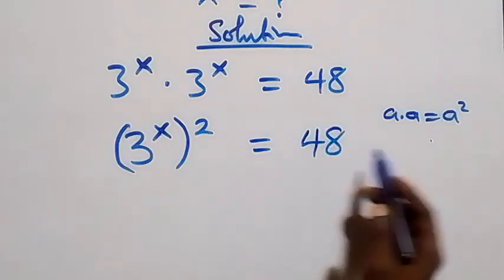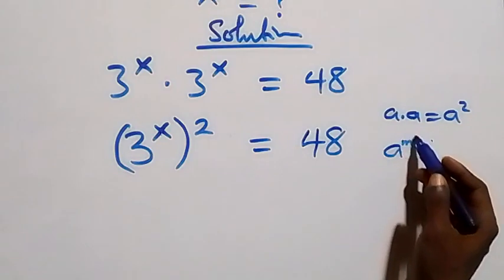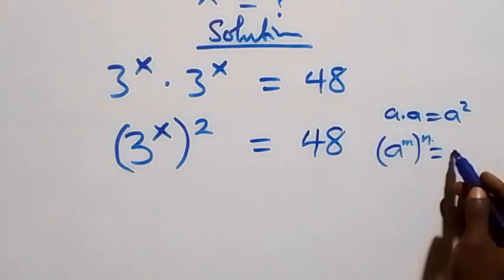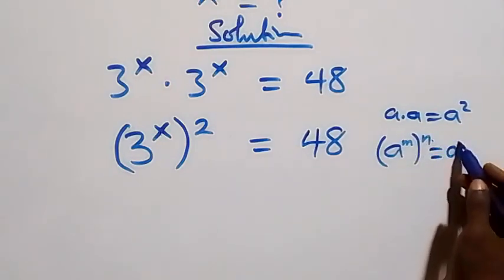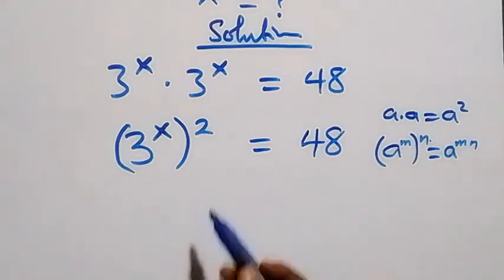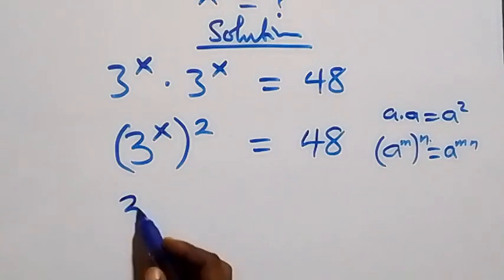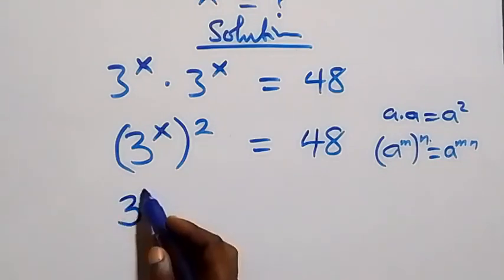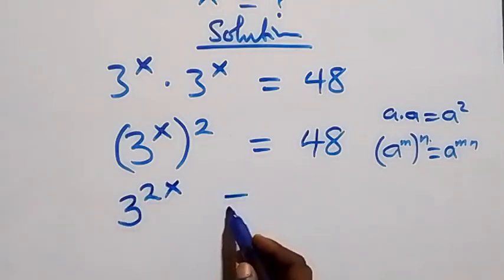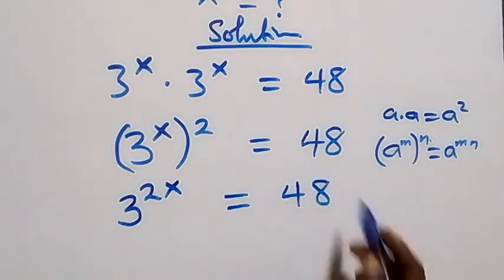From the law of indices, when we have a raised to power m raised to power n, it's the same thing as a raised to power mn. So from here, this power multiplies and this becomes three raised to power two x, equals to forty-eight.